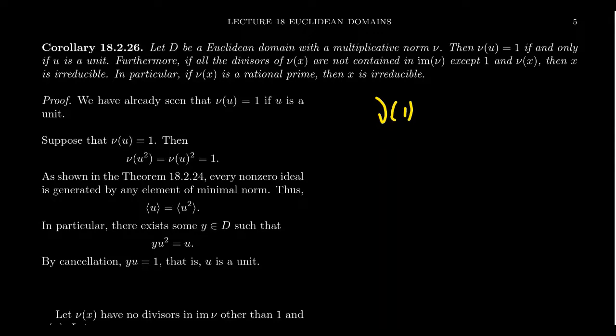Because if it wasn't, what you can do is you can define a brand new norm. We'll call it norm prime, nu prime of x here. And you're going to define this to be the norm of x minus the norm of one, and then you add one to it. This norm is actually equivalent to the original norm, nu. And if you plug in x equals one here, you're going to end up with one. So without loss of generality, you can always assume that the norm of the unity of a domain is always one.